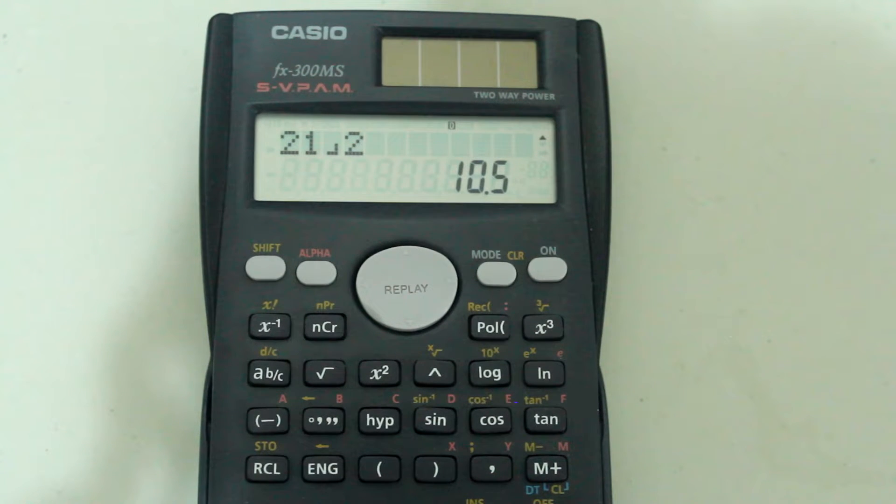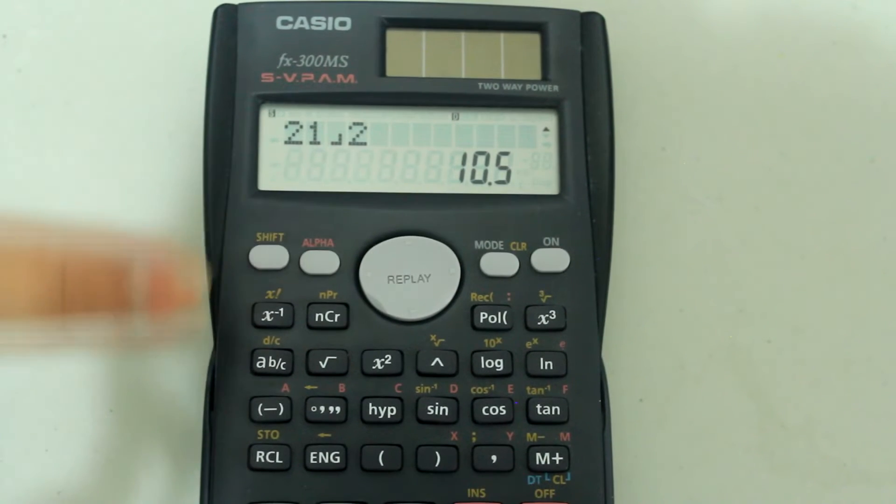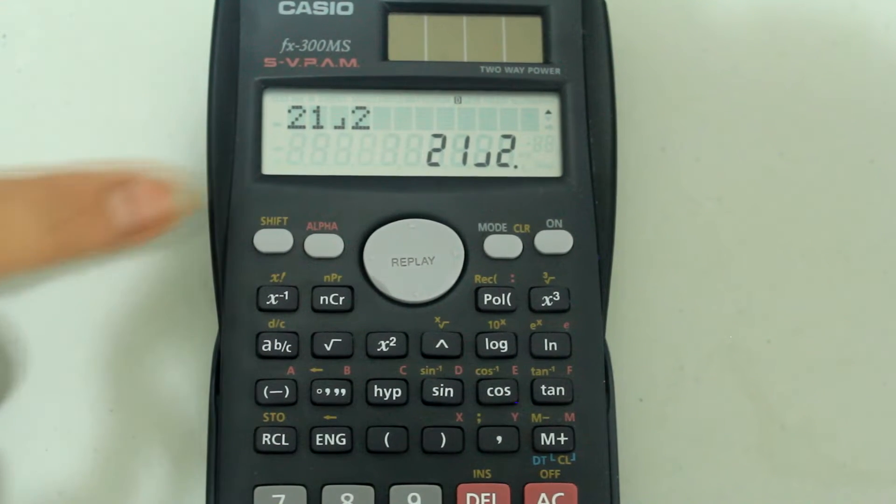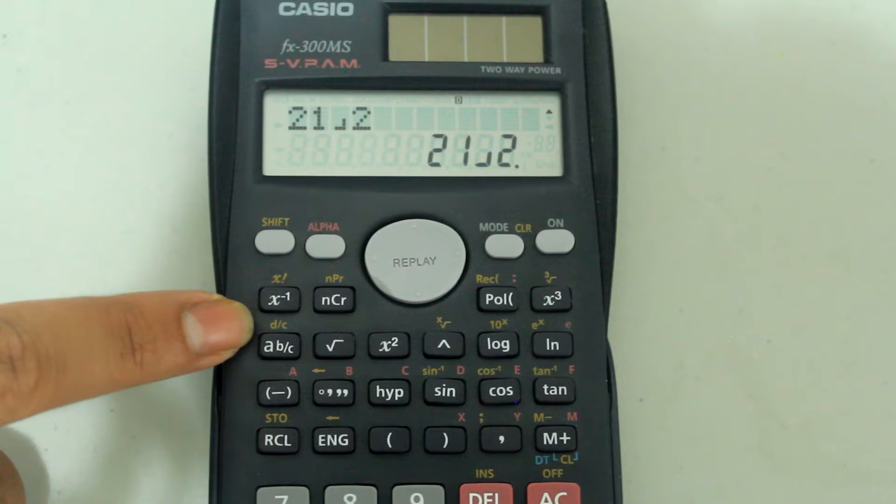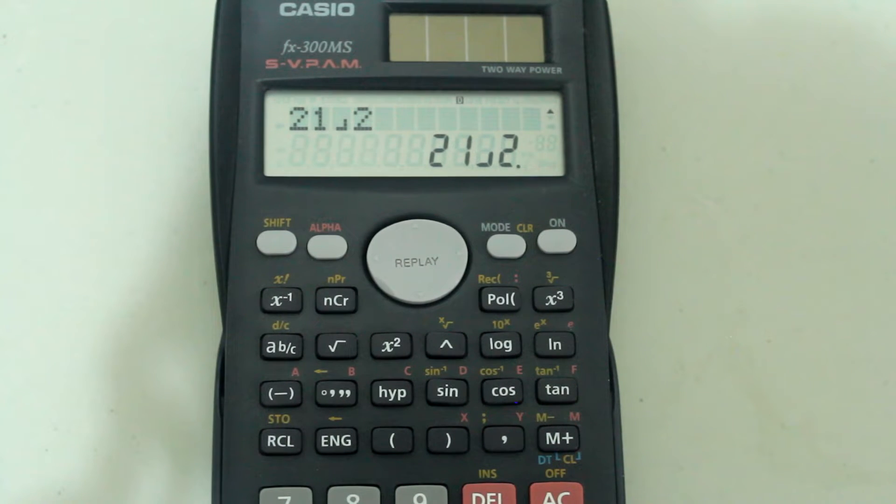If I wanted the improper fraction version of an answer, I would press shift and the fraction button, and I get the improper fraction version. When you press shift, you're selecting the D over C feature, which is the improper fraction feature.